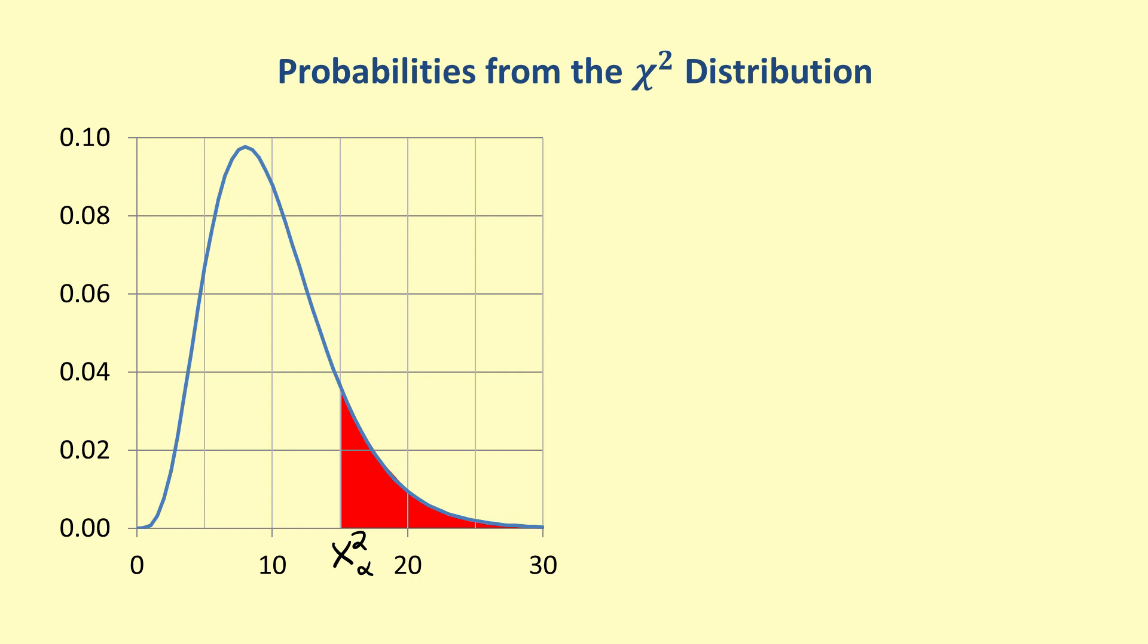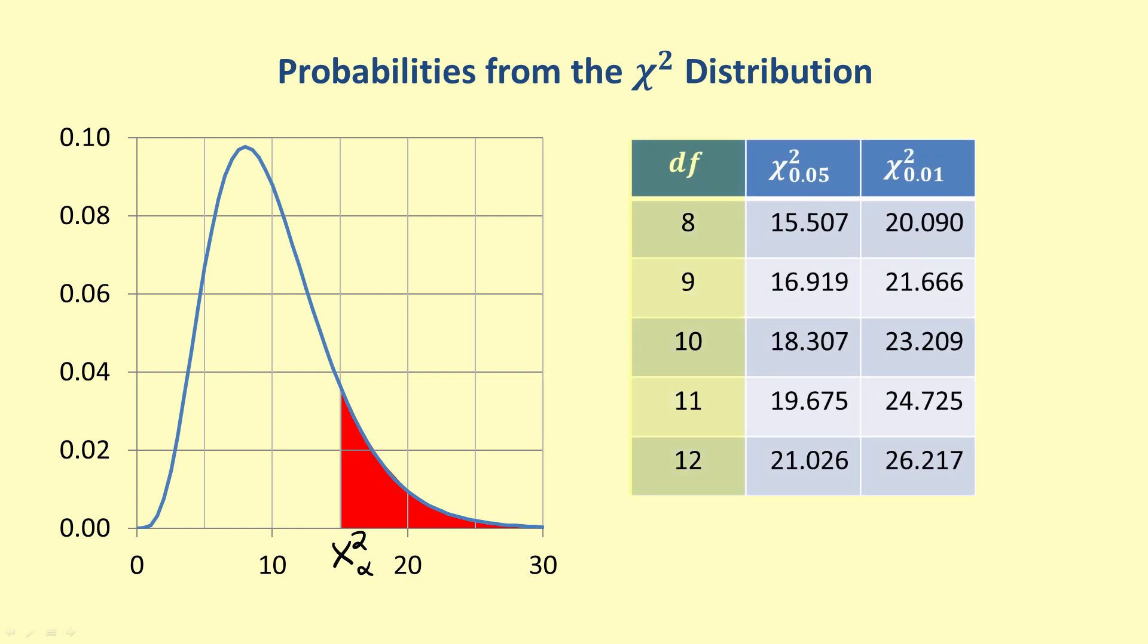For hypothesis tests, the area in the tail, alpha, is the level of significance for the test. The values of the chi-square statistic for commonly used values for alpha can be found in tables. The degrees of freedom are given in the left column, and the chi-square values for particular values of alpha are given in the other columns.